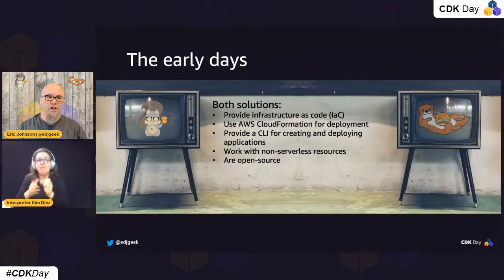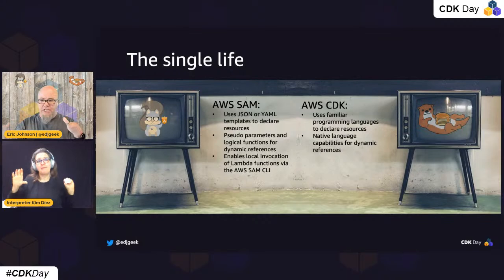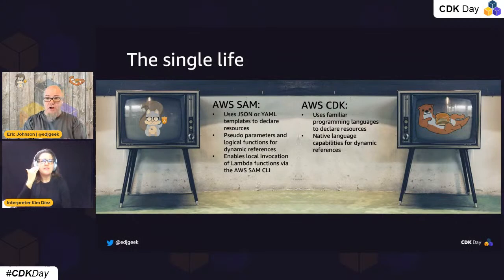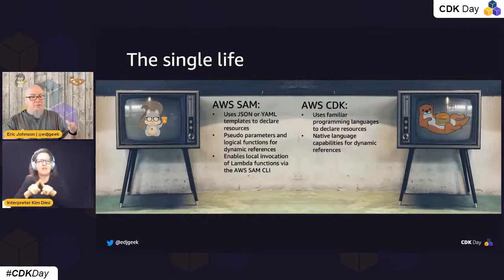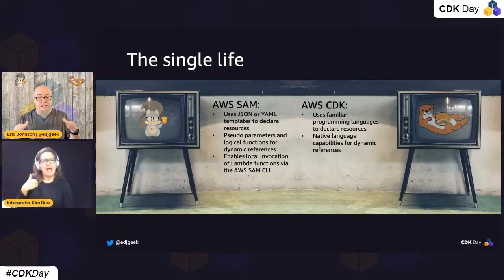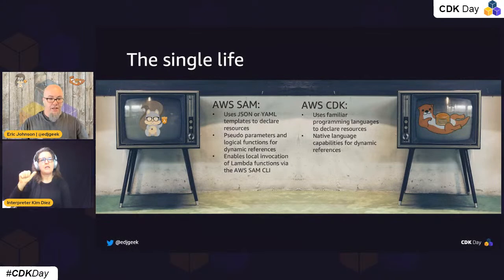But it was still a single life for our two characters. AWS SAM uses JSON or YAML templates to declare resources, while AWS CDK uses familiar programming languages like Python or Node. AWS SAM uses pseudo parameters and logical functions for dynamic references. AWS CDK has these references as well and also uses native language capabilities — like looping through building Lambda functions.